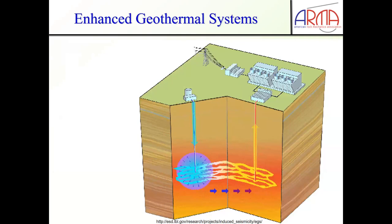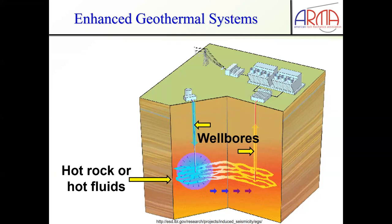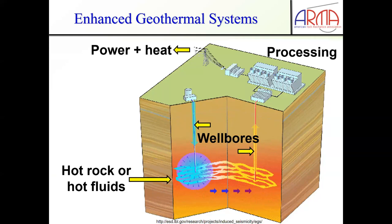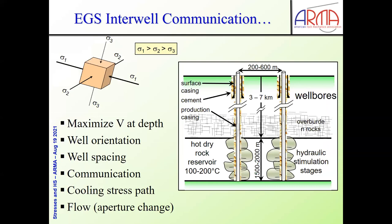Let's look at enhanced geothermal systems. The idea is hot rock, naturally fractured. We stimulate it to open up those fractures. We have wellbores that access the rock mass. We bring the heat to the surface for processing and turn it into electrical energy and heat. So we're going to drill some wells — horizontal, vertical, inclined. You see the cartoon just for vertical wells, going down quite a few kilometers into the region where the rock is very hot.